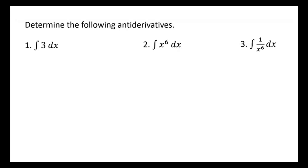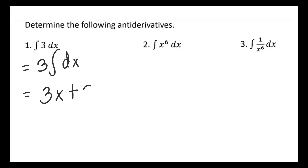Example 1: the integral of 3 dx. We apply rule (c) — take out the constant 3, leaving the integral sign and dx. This gives us 3x + C. When finding antiderivatives, we always add the letter C. The answer cannot be just 3x; we must include plus C.